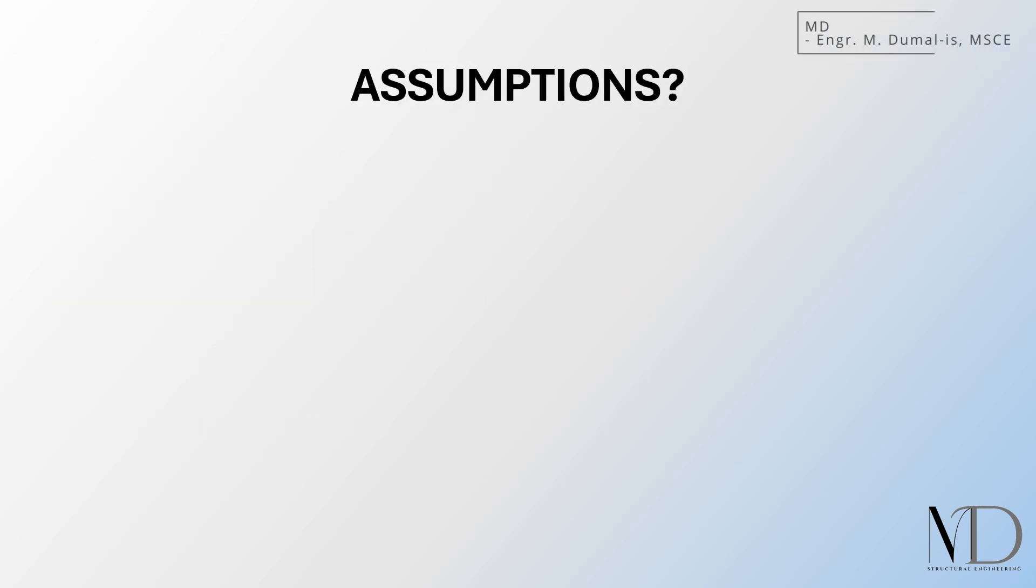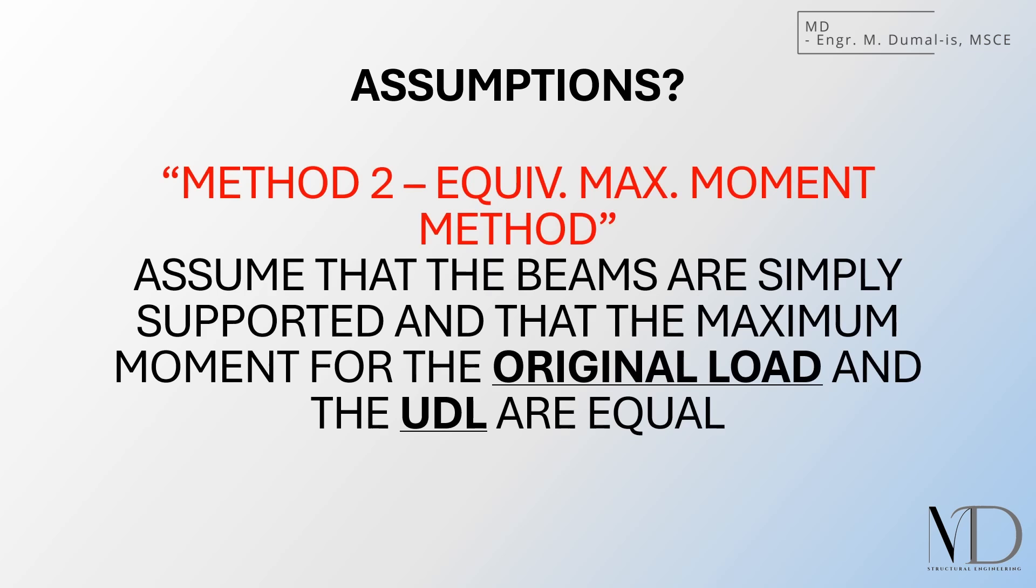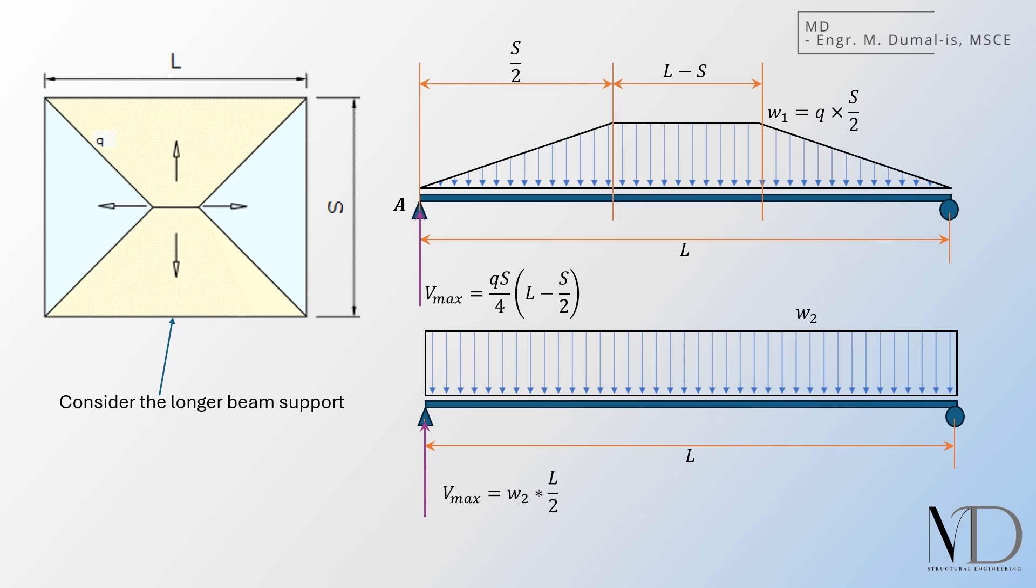The second approach is the equivalent maximum moment method. Here, instead of focusing on shear, we match the maximum bending moment between the original load and the equivalent UDL. Since bending moment is a critical factor in beam design, this method ensures that the simplified load produces the same peak moment effect. Again, the process is straightforward. Determine the maximum moment from the original load and find the UDL that gives the same moment. This method is particularly useful when bending dominates the design, like in longer spans or more flexible beams.